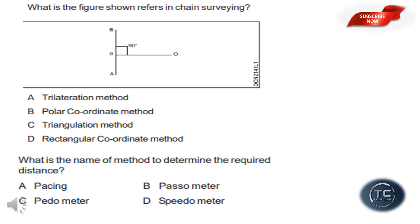What is the figure that refers to chain surveying? I am going to show this figure in chain surveying. The options are trilateration method, polar coordinate method, triangular coordinate method, and rectangular coordinate method. The answer is option D: rectangular coordinate method.